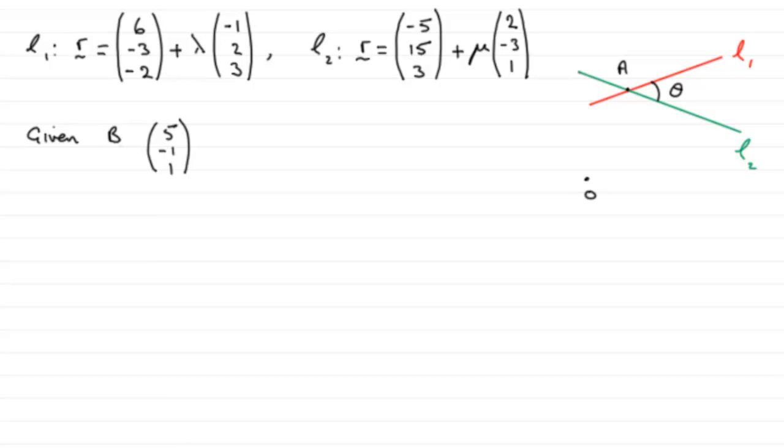Now, for this part, we're told that the point B has position vector 5, minus 1, 1. In other words, OB is the vector 5, minus 1, 1. And we're asked to show that B lies on the line L1.